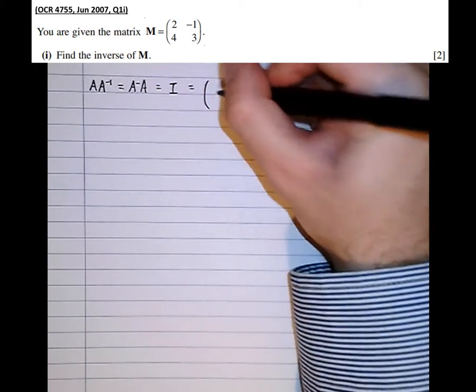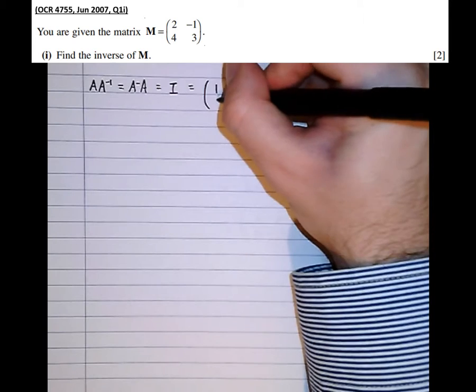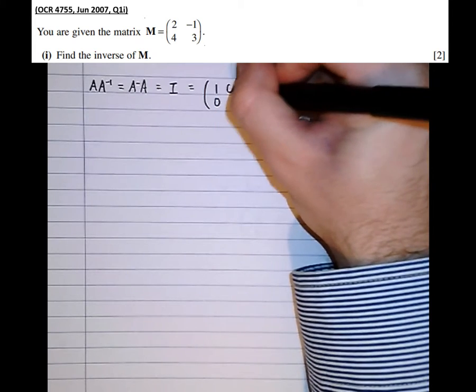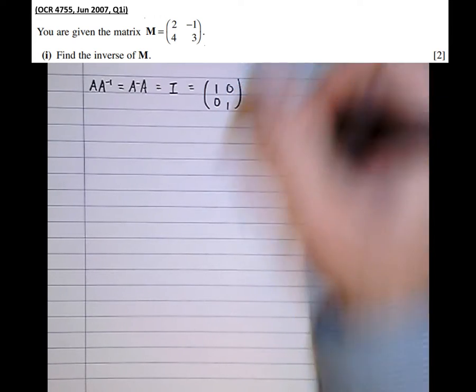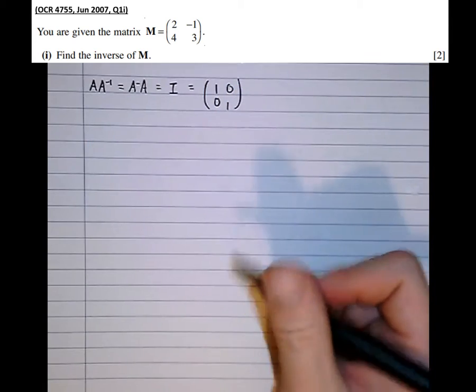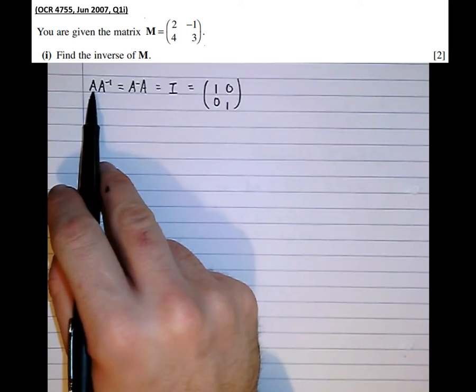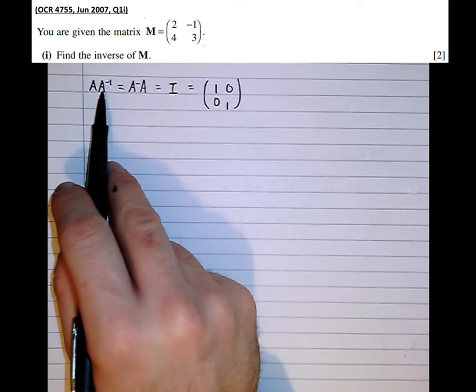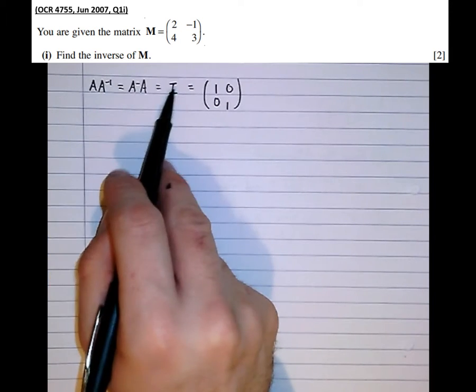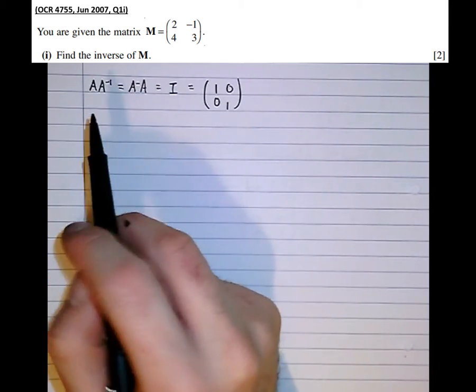So in 2 by 2 terms, the identity matrix is 1, 0, 0, 1. So if we have a matrix A and we find another matrix so that when we multiply by it we get I, then it's an inverse.